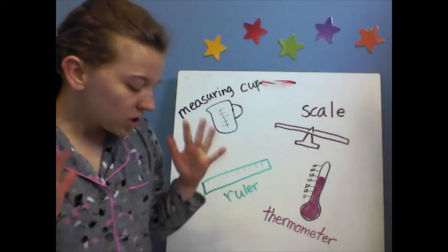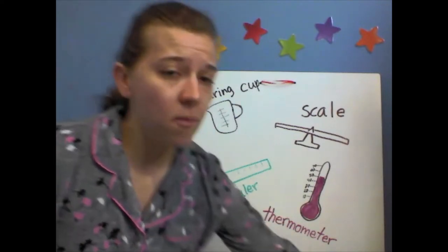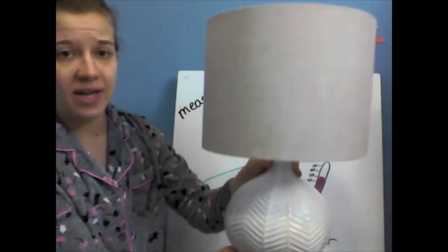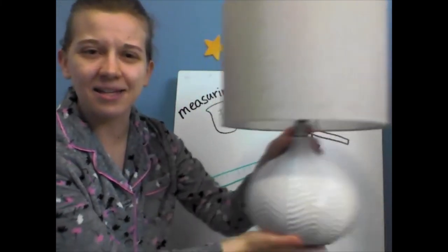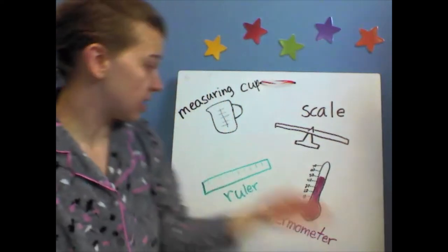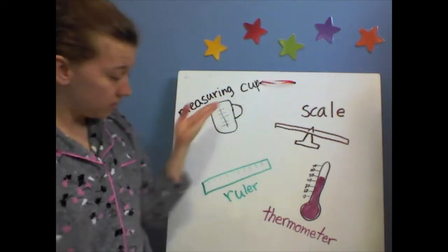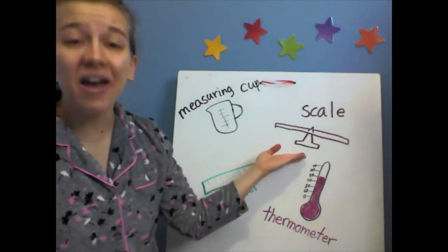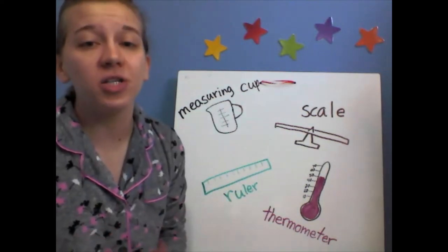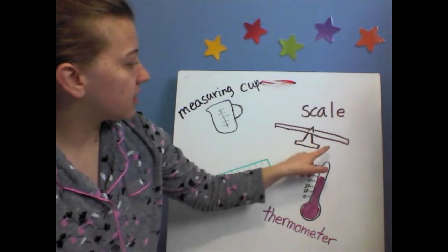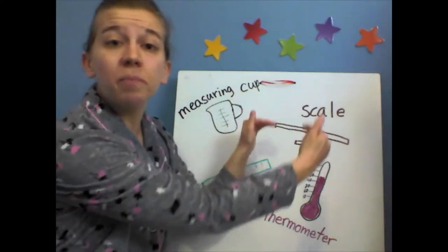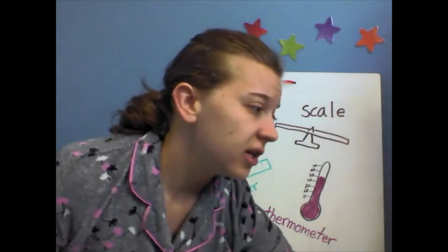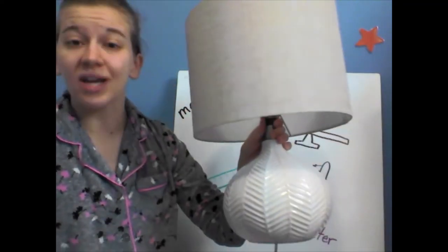And which measuring tool would you use to find out how much a lamp weighs? Here's my lamp. Would you use a measuring cup, a scale, a ruler, or a thermometer? A scale. A scale measures how much something weighs. And with scales like this, you can also compare weights — for example, the weight of a lamp and the weight of a book.